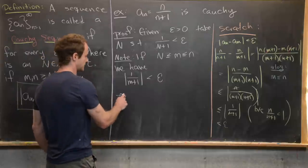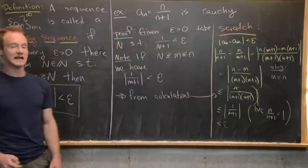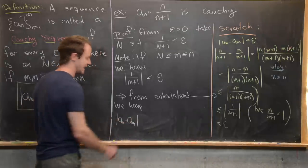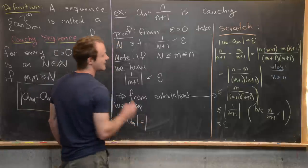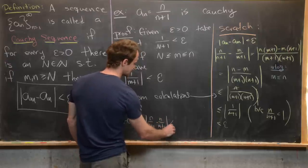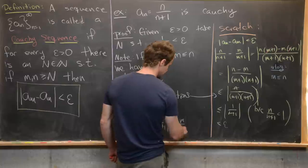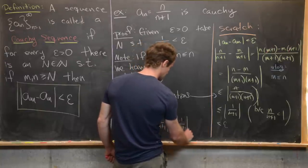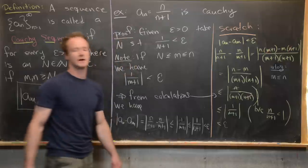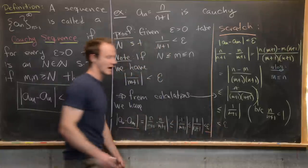From the earlier calculations in reverse, |a_n - a_m| equals |n/(n+1) - m/(m+1)|, which is less than or equal to |n - m| / ((m+1)(n+1)), which is less than or equal to 1/(m+1), which is less than or equal to 1/(N+1), which is strictly less than epsilon. Looking at the extreme left and right sides of the inequality, that is exactly what we needed to show.